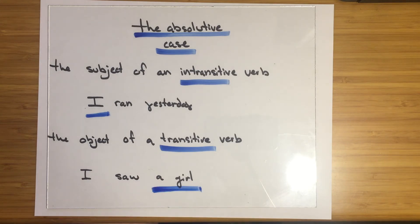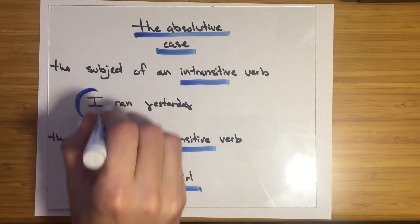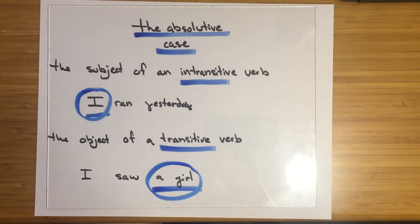But that's what the absolutive case is, and there are lots of languages that use it. In those languages, this noun phrase here and this noun phrase here would be marked the same way.